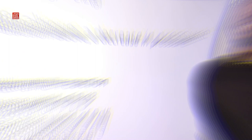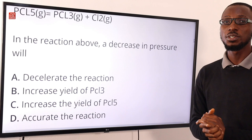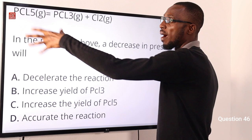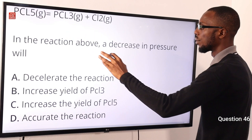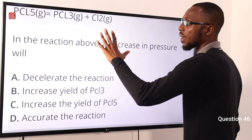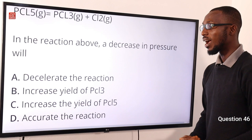Click the link in the description to visit the MySchool website and get the MySchool app, activated with a token of 1000 Naira. Question 46: We have BCl5. A decrease in pressure will favor the product side, increasing the yield of BCl3. The correct option is option B.